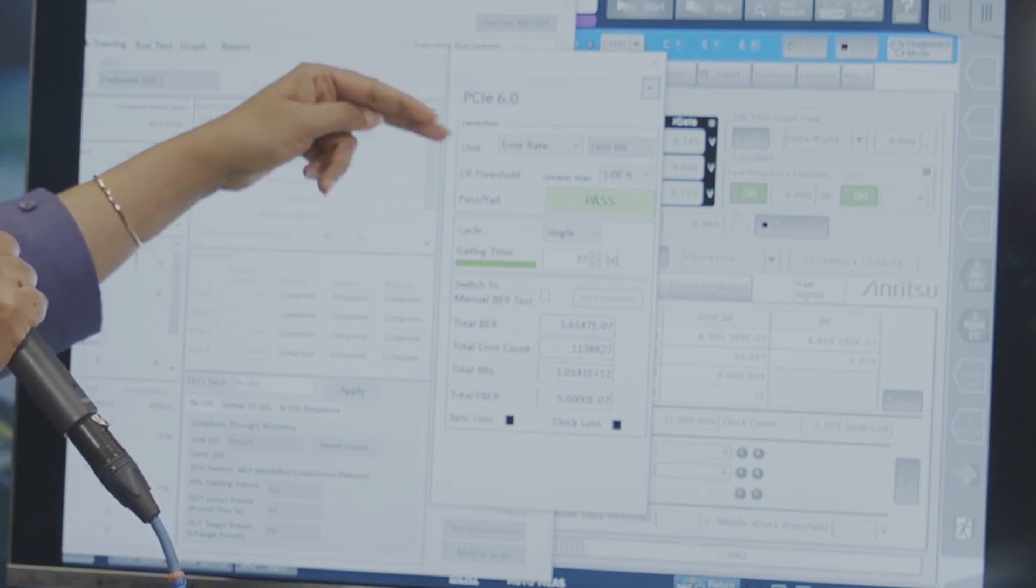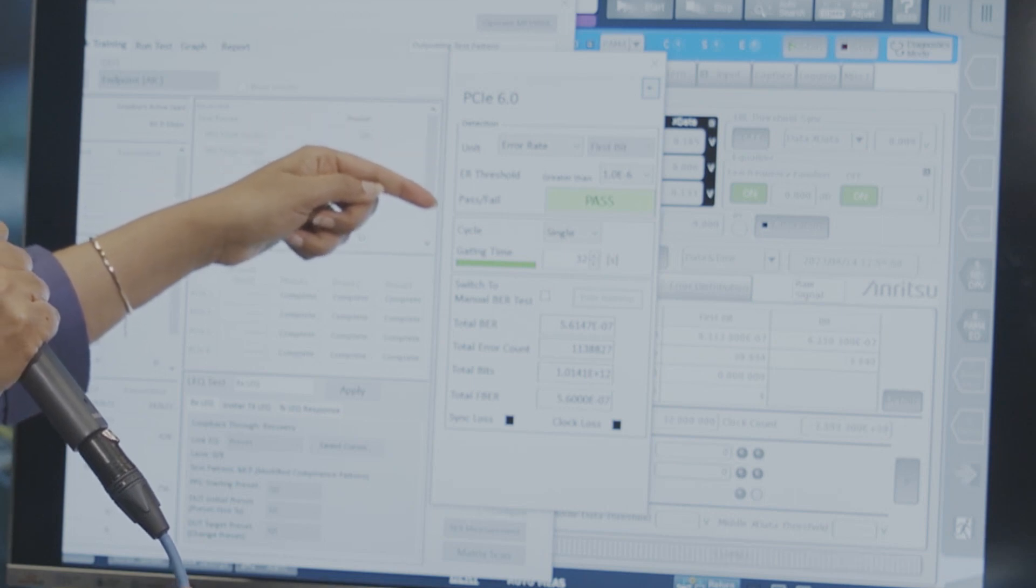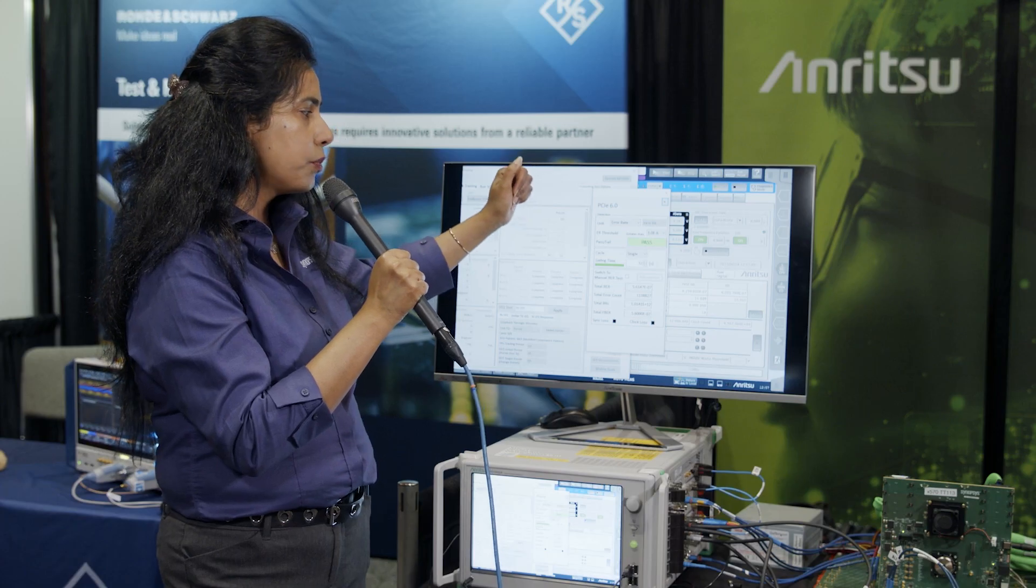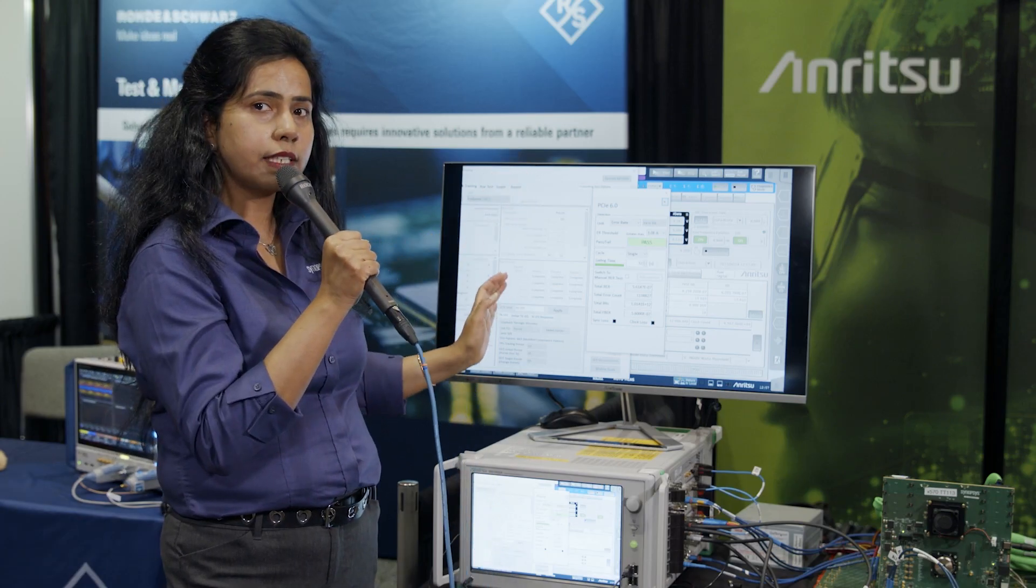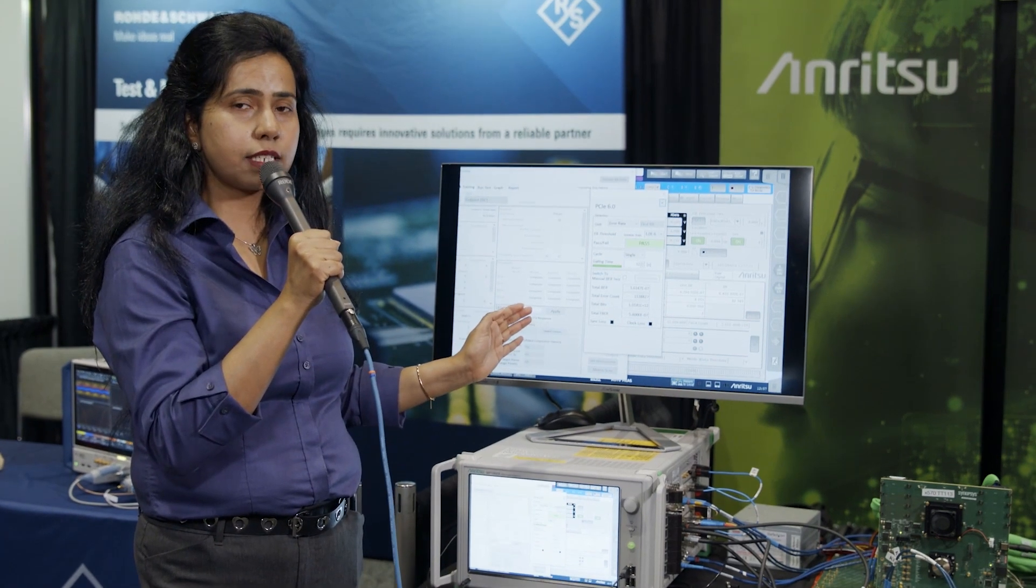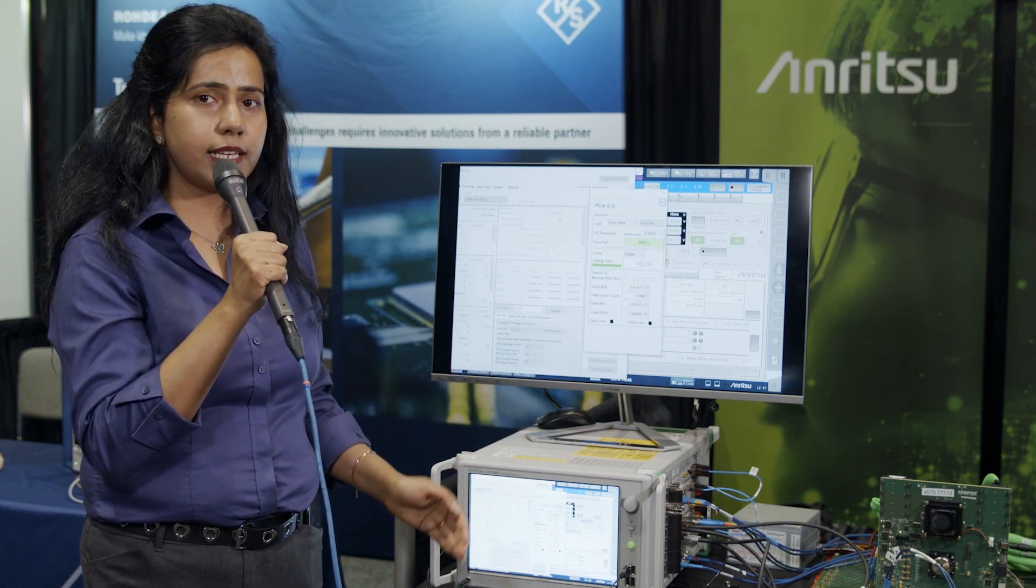The spec itself calls for 1 in minus 6 for the first bit error rate. Here in the graphical interface you can see that all of these tests have been passed. Basically what we are showcasing here, the world's first receiver link training test has been completed through all generations as well as Gen 6.